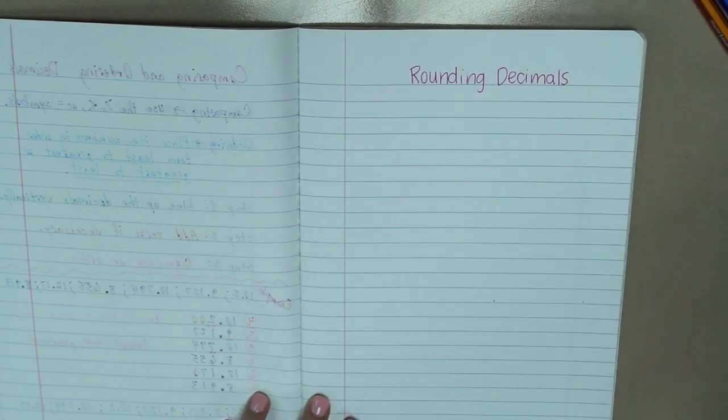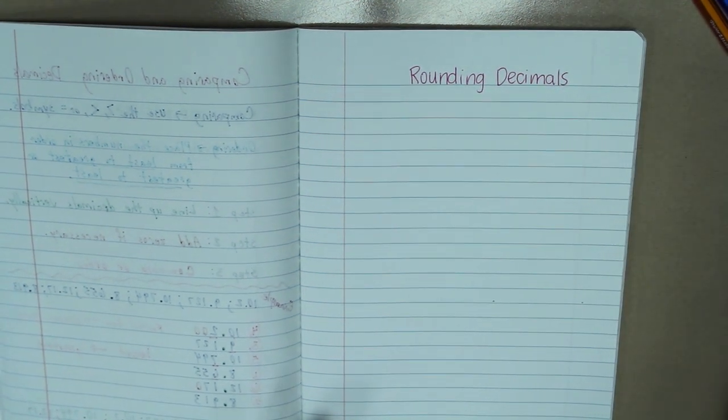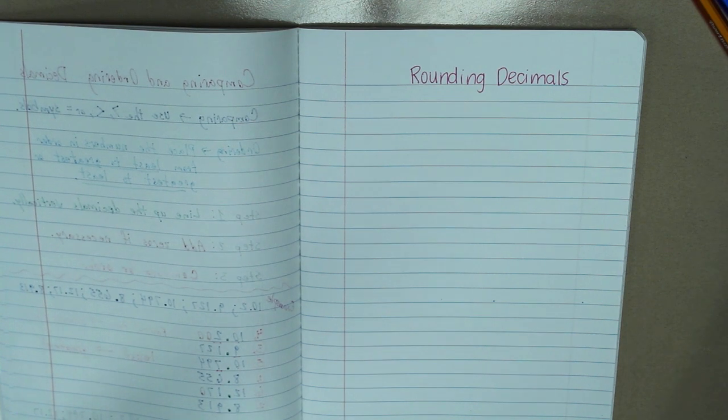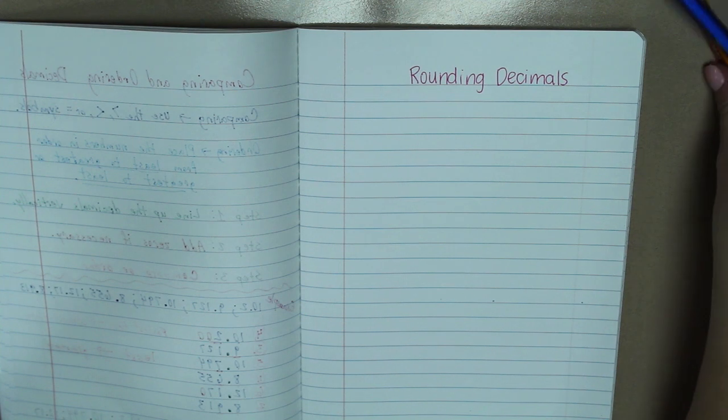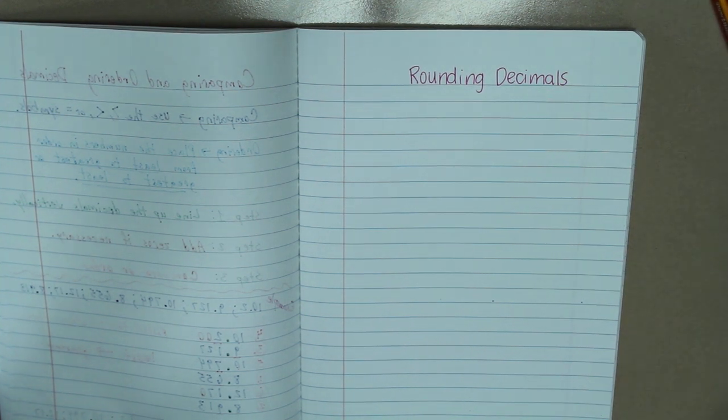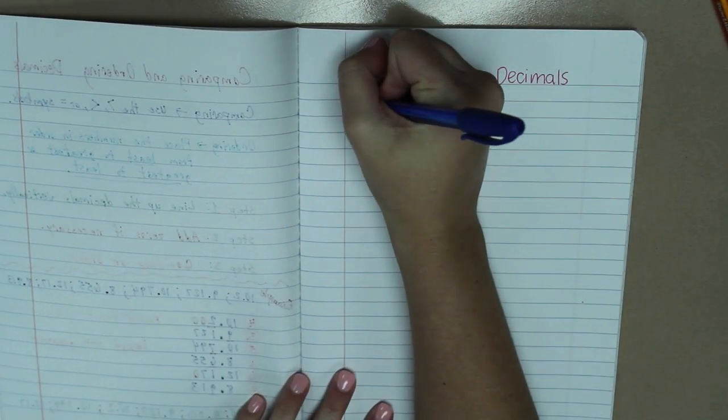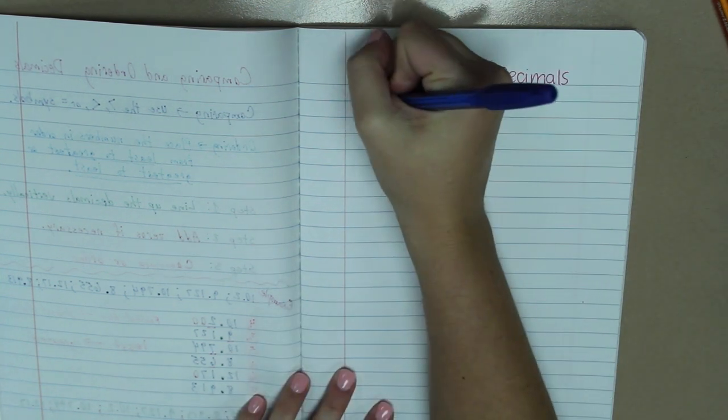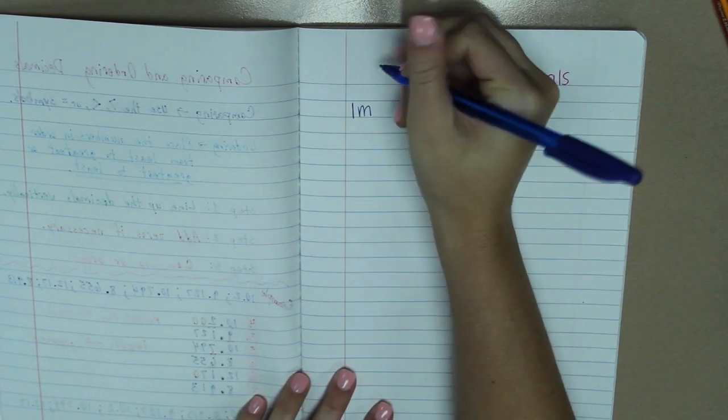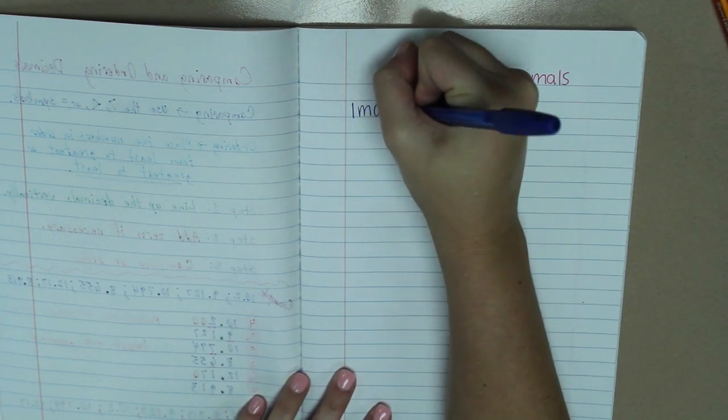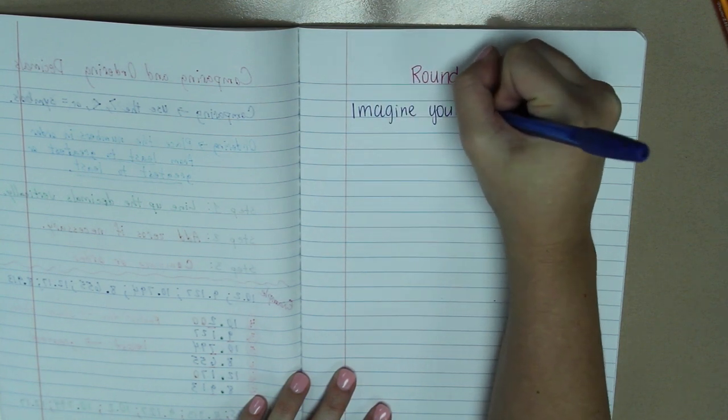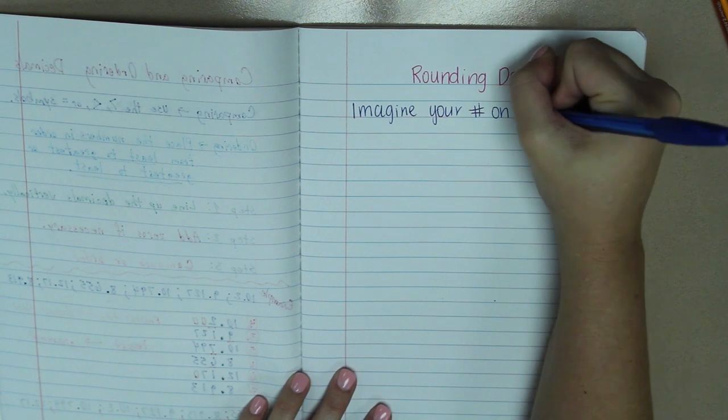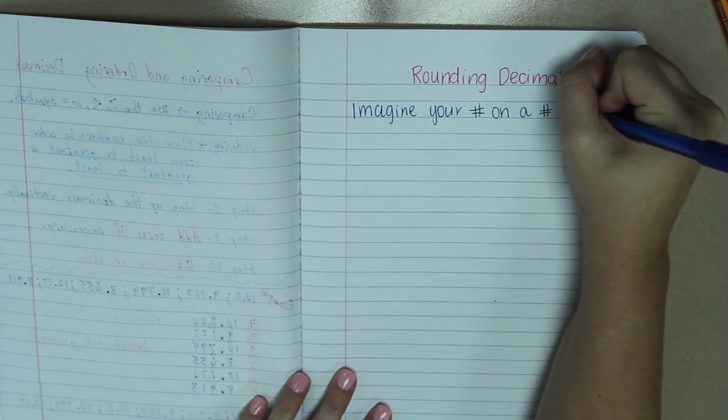Now you should be very familiar with rounding because you did it a lot in fourth grade, but most of the time you were rounding whole numbers. So we're really going to focus on the decimals today. The way we want you to round decimals is to imagine your number on a number line. So we're going to be drawing a couple of number lines today.